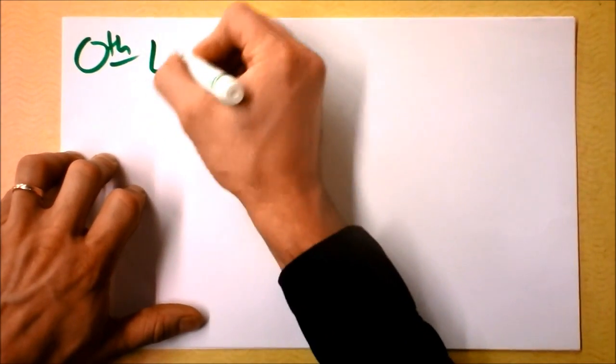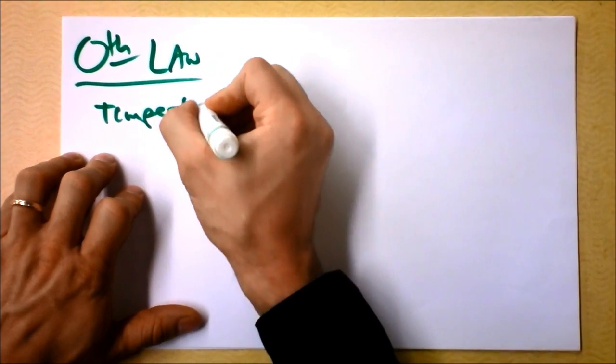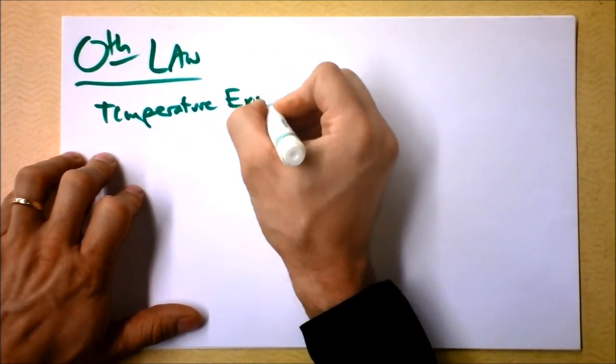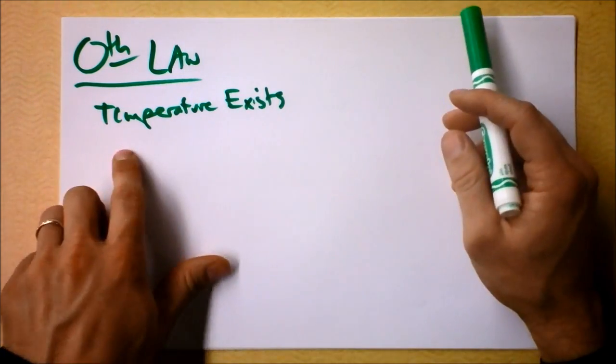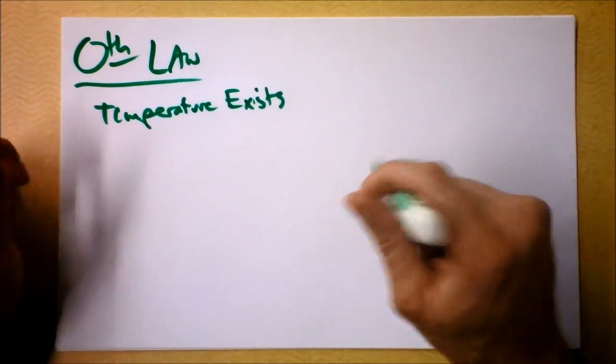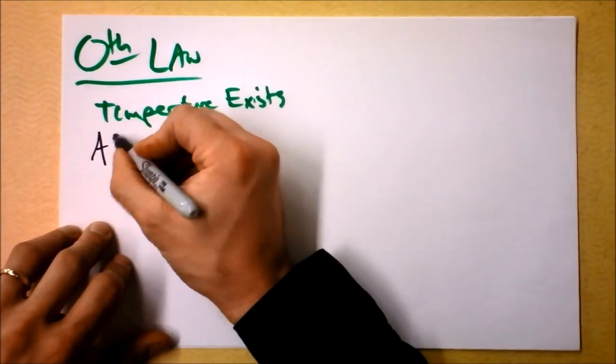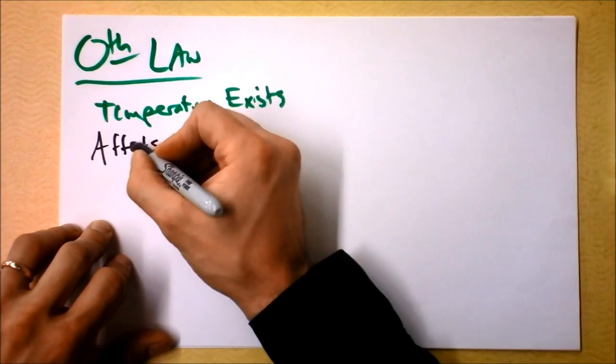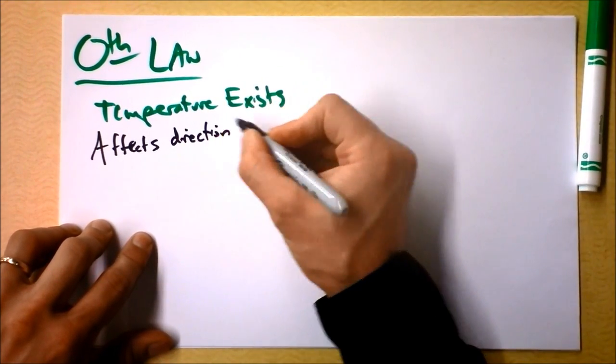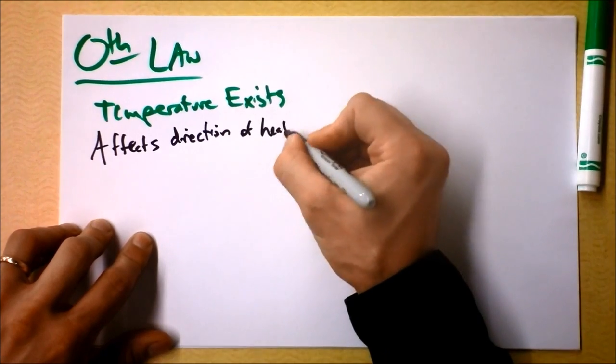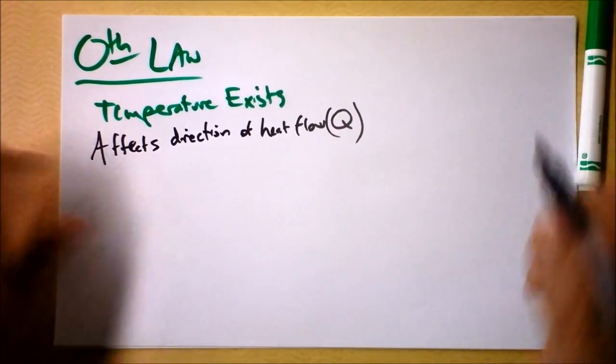We're going to start with the zeroth law, and that is temperature exists. It's that thing that when two objects have been in contact forever, they will approach the same temperature. Temperature also affects the direction of heat flow, and I'm going to call that Q, heat flow.